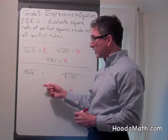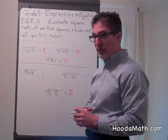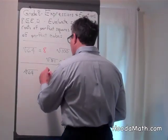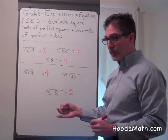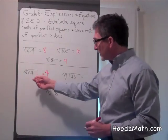What number times itself, times itself, gives you 64? Correct, 4. 4 times 4 times 4 is 64.